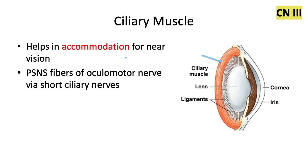We'll start with the ciliary muscle. This muscle surrounds the lens of the eye and helps in accommodation for near vision — it changes the shape of the lens to allow closer objects to come into focus as projected onto our retina. This is controlled primarily by the parasympathetic nervous system via the short ciliary nerves that feed into the oculomotor nerve, cranial nerve 3.